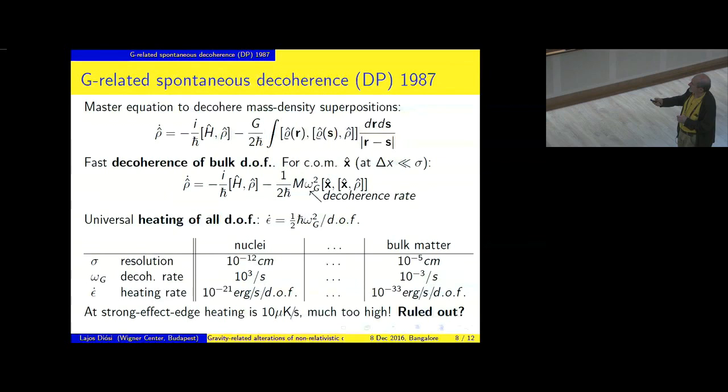Again, the structure becomes much simpler if we consider some bulk matter, maybe a ball, a rigid ball, with center of mass coordinate x with the hat. And again, we assume that the coherent width of the center of mass is much less than the yet unknown resolution sigma. We got this equation. It is quite similar to the Schrodinger-Newton equation with the harmonic potential, but in place of harmonic potential, now we have the double commutator.